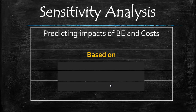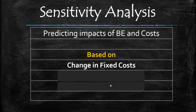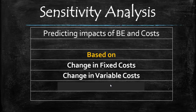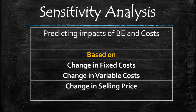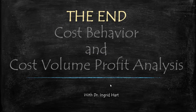Another benefit of cost volume profit analysis is predicting the impact of changes. If fixed costs increase, break-even increases. If variable cost drops, contribution margin increases and break-even decreases. If selling price increases, break-even units decrease because more money is made per unit. Conversely, if selling price drops, more units must be sold to break even. By varying the different cost components, we can determine the impact on break-even and subsequently on the profit line.